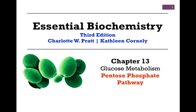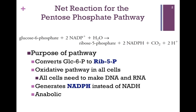In our final lesson on glucose metabolism from Chapter 13, we want to examine the pentose phosphate pathway. Here we have the net reaction for the pathway. We begin with glucose 6-phosphate and convert that to ribose 5-phosphate, one of our two major products. We converted a 6-carbon sugar to a 5-carbon sugar. This is a pathway that operates in all cells, and it is oxidative overall.